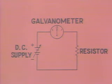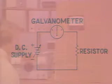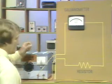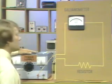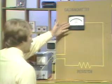This simple DC circuit may be used to simulate alternating current. The circuit consists of a variable DC power supply, a resistor, and a galvanometer. Here's our circuit built up in the laboratory. Here's the DC supply, the resistor, and the galvanometer.